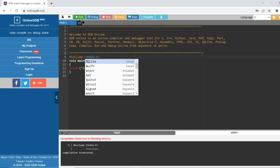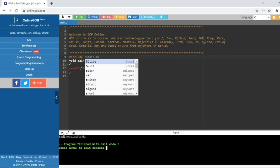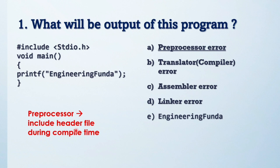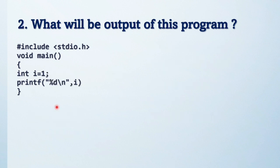This is the proper library of C. It will print 'engineering funda', so the output is a preprocessor error, because the preprocessor includes the header file during compilation time. If you don't include the proper header file of C programming, it will generate a preprocessor error.